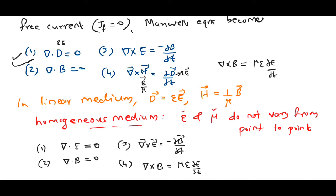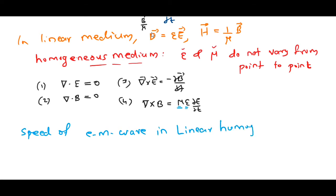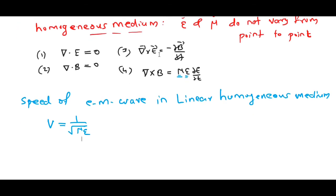Now let us calculate the speed of the electromagnetic wave in a linear homogeneous medium. The speed v is equal to 1/√(με). This is the speed of the wave in a medium. We know the speed of the wave in free space was c = 1/√(μ₀ε₀).